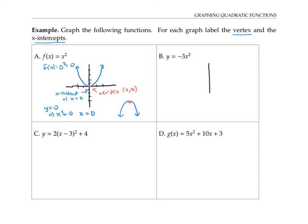The second function, y = -3x², also goes through the origin, since the function's value when x = 0 is y = 0. But in this case, the parabola is pointing downwards. That's because a negative sign on the outside reflects the function vertically over the x-axis, making the parabola point downwards instead of upwards. The number three on the outside stretches the graph vertically by a factor of three, making it long and skinny.